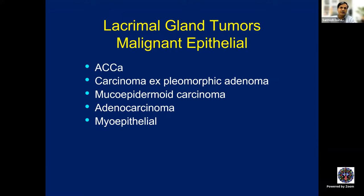Moving on to malignant epithelial tumors: adenoid cystic carcinoma is most common, followed by carcinoma ex-pleomorphic adenoma (pleomorphic adenoma transformed into adenocarcinoma). Primary adenocarcinoma is extremely rare, with only a few case reports. There is also mucoepidermoid carcinoma and myoepithelial lacrimal gland tumor. These cannot be clinico-radiologically distinguished one from the other — they all look nearly the same on MRI or CT.